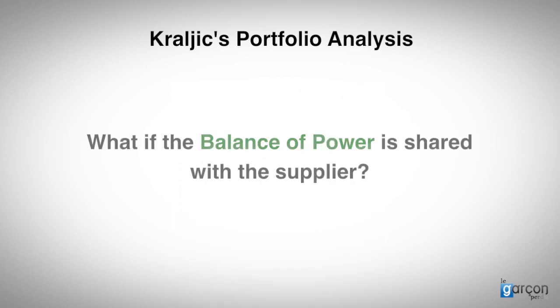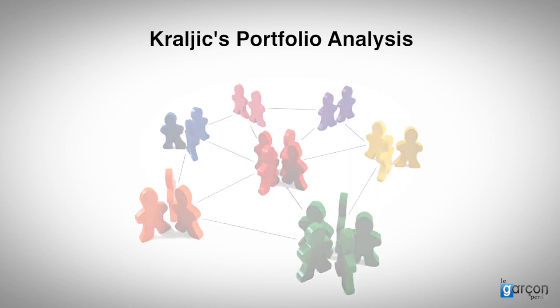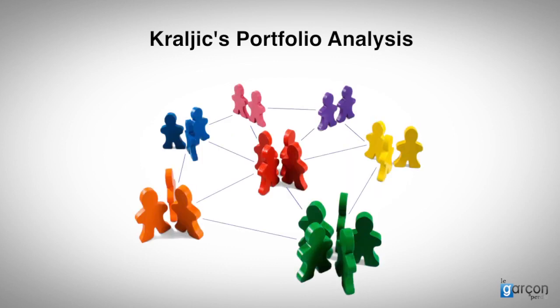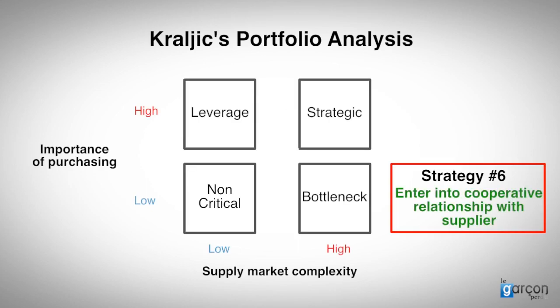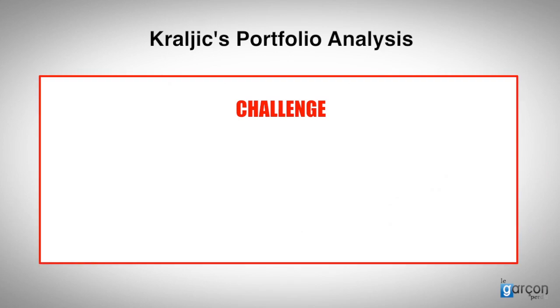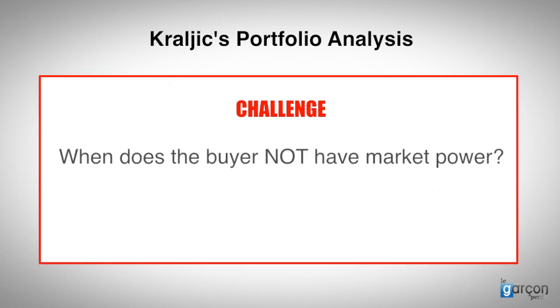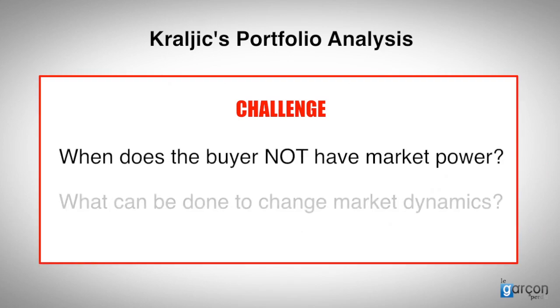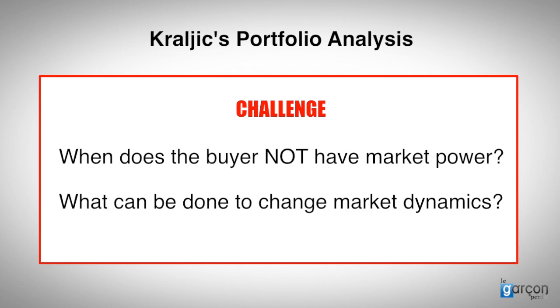But what if the balance of power was shared with the supplier? If that was the case, the buyer could enter into a cooperative relationship with the supplier. This would be strategy six, but in my experience, it's very rare. The challenge of supply-market analysis is to understand when the buyer does not have market power and to understand what may be done to change the market dynamics.